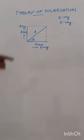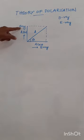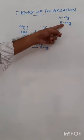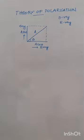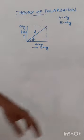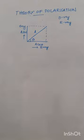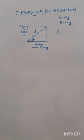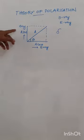O ray and E ray travel with different velocities. The O ray travels with the same velocity in all directions and so the wave surface will be a sphere, whereas the E ray travels with different velocity in different directions and the wave surface of an E ray will be an ellipse. Due to this difference in velocity, a path difference will be introduced between them when they come out of the crystal.